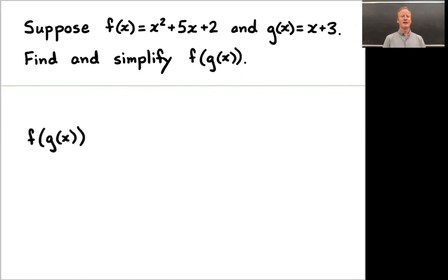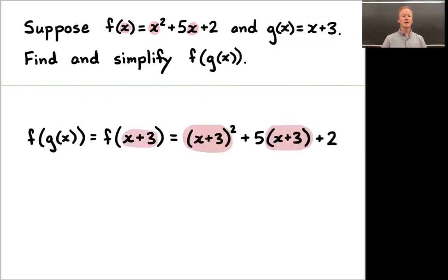Welcome back. F of g of x. We know what f of x is at the top of the screen. The first part of this problem is to recognize that rather than putting x in the place where you're told to with the formula for f, you're going to put x plus 3 in that place. Rather than thinking of what f is telling you for x, think of what f is telling you for a red blob. This time the red blob is x plus 3. F of x plus 3 is x plus 3 squared plus 5 times x plus 3 and then you're going to add 2.